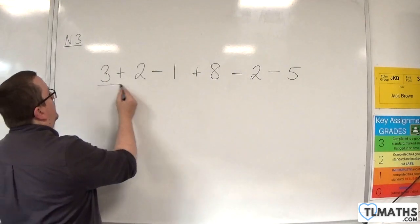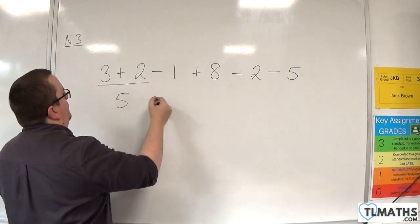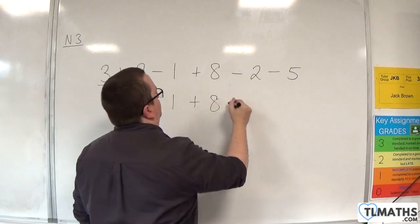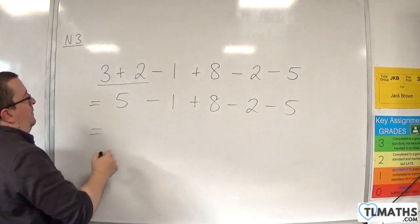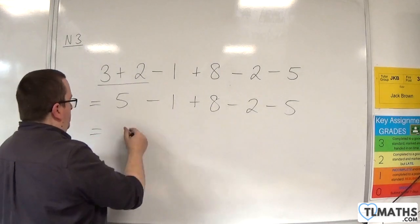So, first of all, 3 plus 2, well, that's 5. Right, so then we've got 5 take away 1, which is 4.